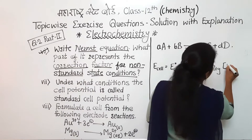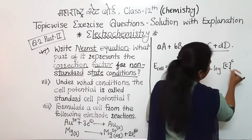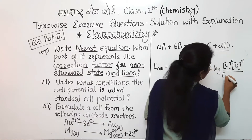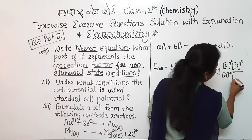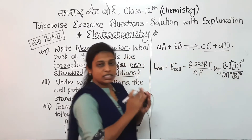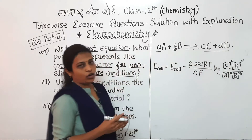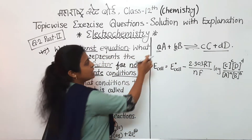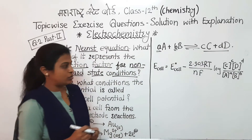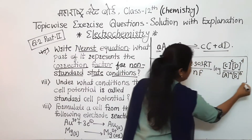The Nernst equation is: E_cell = E°_cell − (2.303RT / nF) × log([C]^c × [D]^d / [A]^a × [B]^b). Here the concentration of products is divided by the concentration of reactants, with each raised to the power of its stoichiometric coefficient. For example, if the coefficient is 2, we take the square of that concentration.